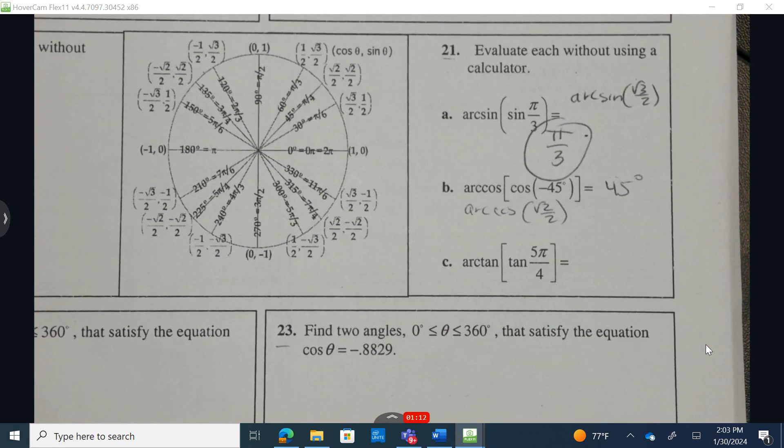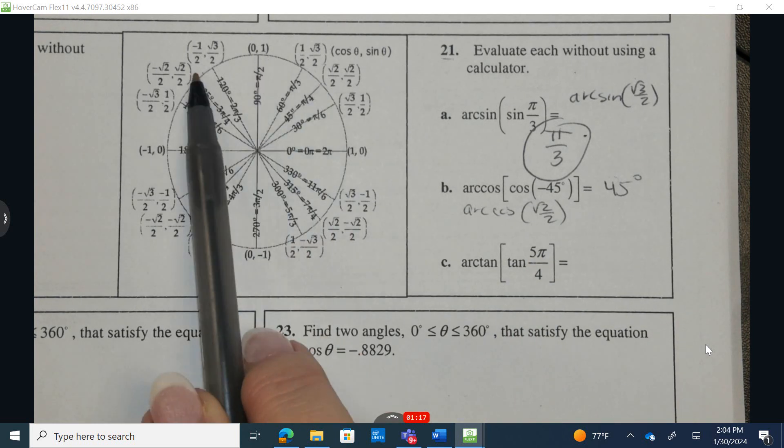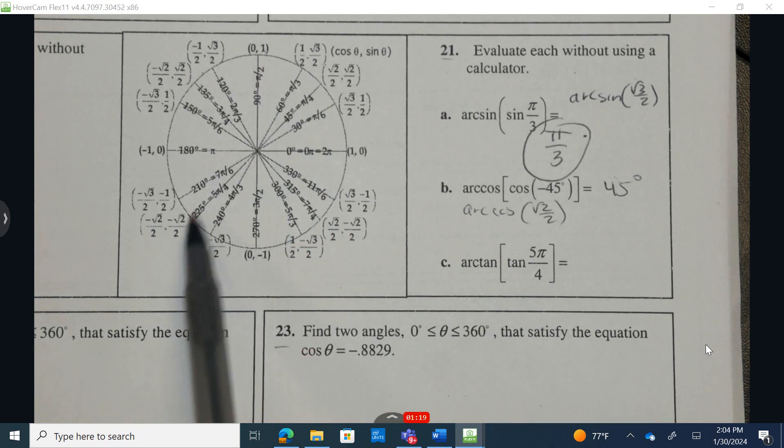Let's move on to the tangent. So we want the tangent of 5 pi over 4. So 1 over 4, 2, 4, 3, 4, 5, 4, 4, 5, 4. So right here.